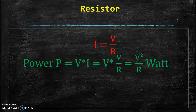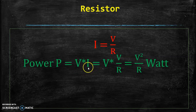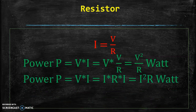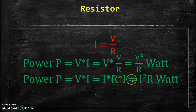Now let us study the equation of power. Power P is the product of applied voltage V multiplied by current I. If we substitute the value of I, that becomes V multiplied by V divided by R, and by simplification it becomes V squared by R, with the unit of power being watts. In another way, the equation of power can be written by substituting the value of V as I multiplied by R, so by simplification it becomes I squared R watts.